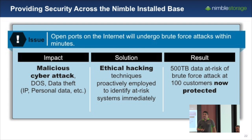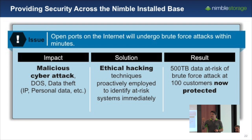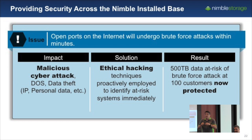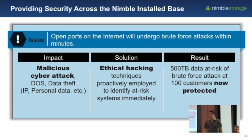You never know if you've installed the array correctly — people make mistakes during installations. Every time an array is installed, we check the management interfaces to see if they're on a public-facing IP address. If they are, we try to connect to them, and if we get a Nimble prompt back, we create an alert automatically to tell our customers: your management interface is on a public-facing IP address, it's inherently insecure, it's a potential problem. This is done through automation to protect our customers' environments. So far, we've found 100 customers that haven't installed their arrays correctly and we've protected half a petabyte of data that would have otherwise been exposed.